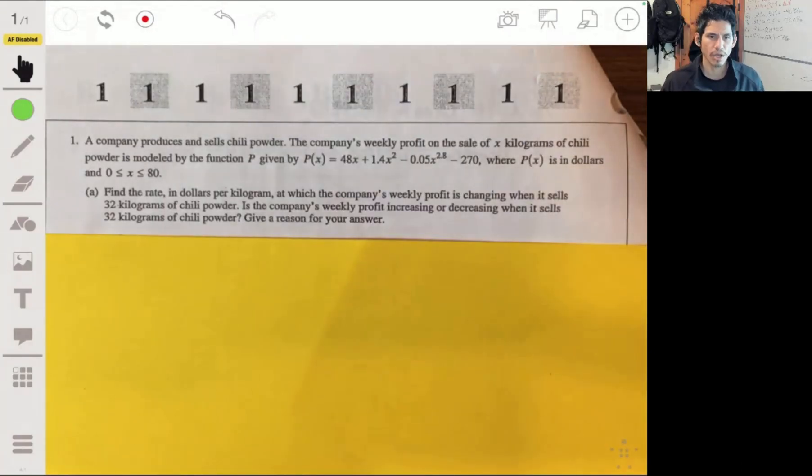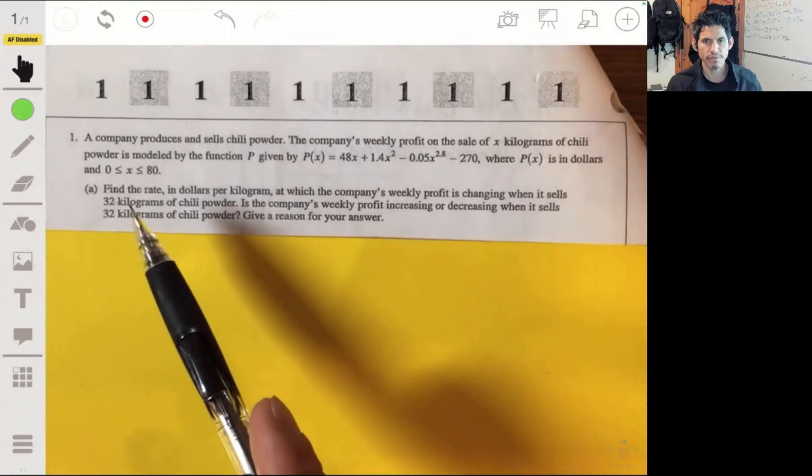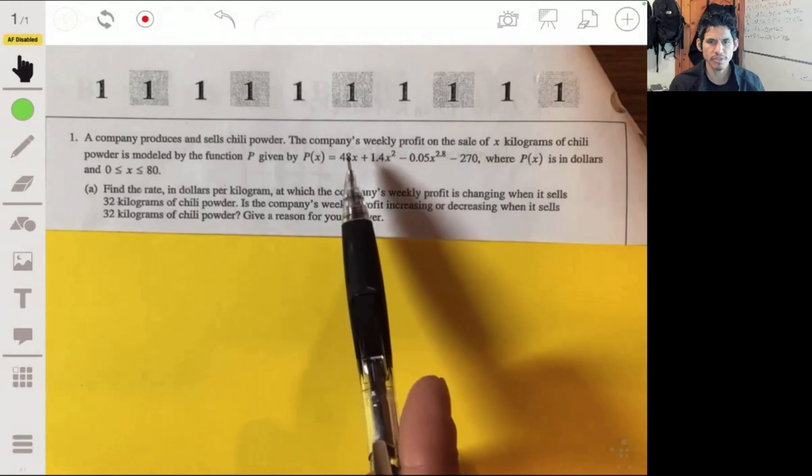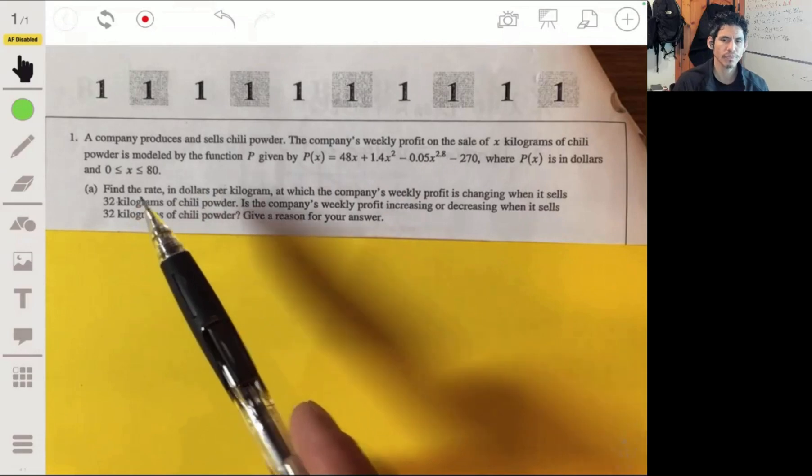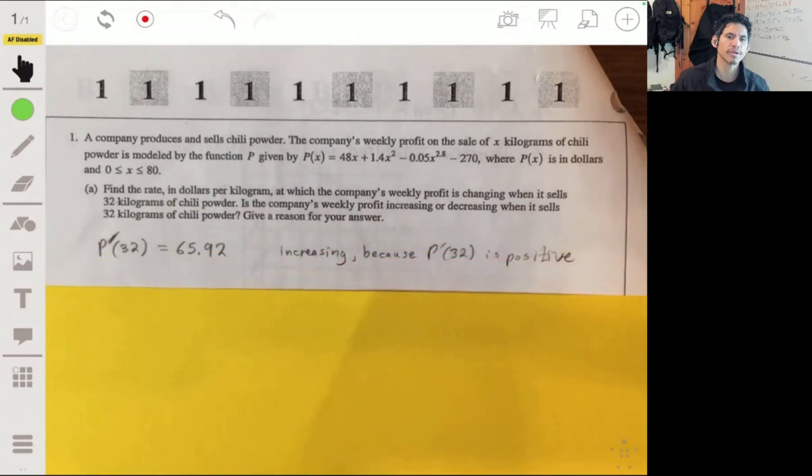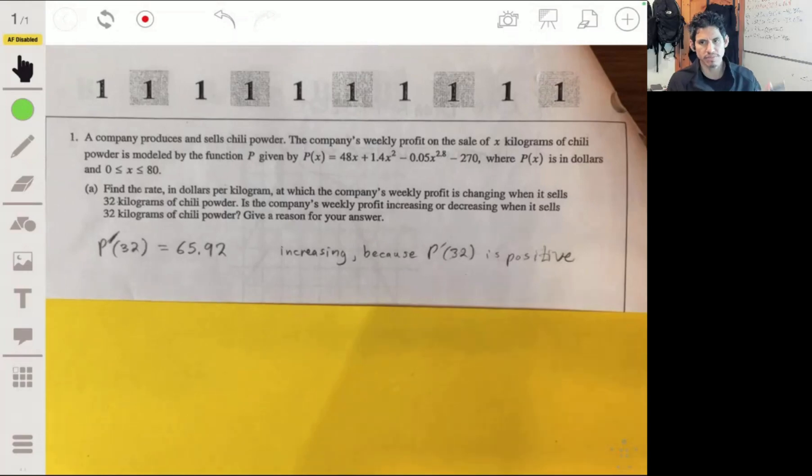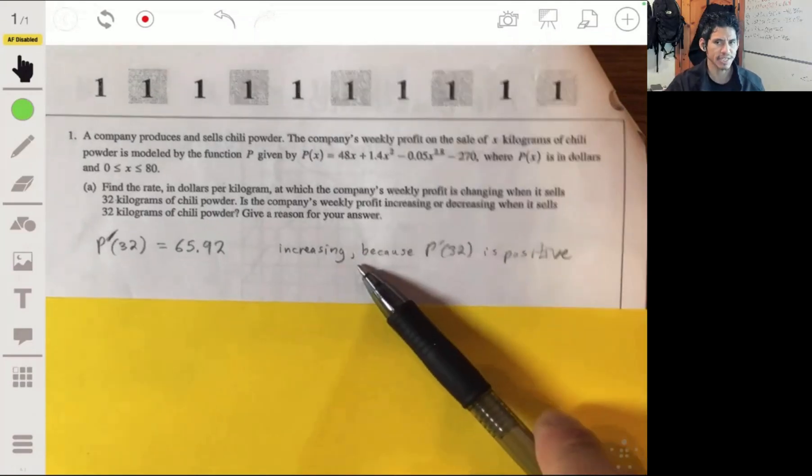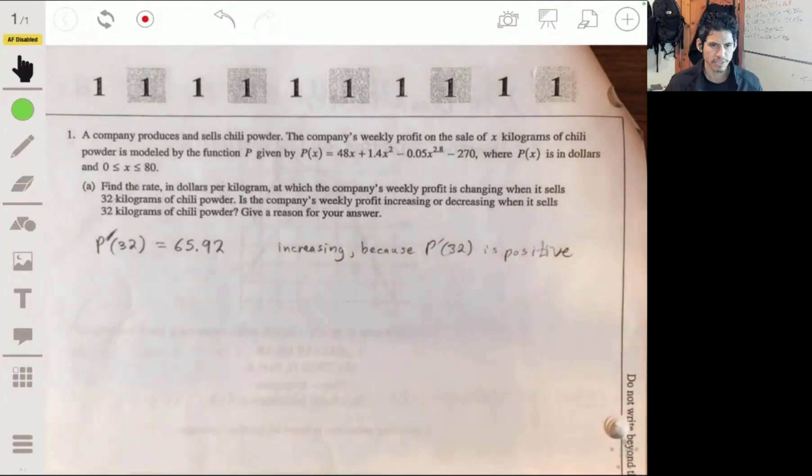Okay, so remember when we're talking about rate, that's the derivative. Let's find the derivative of this function. We want to find P'(32). If we get a positive number, it's going to be increasing. If it's negative, it would be decreasing. If we evaluate P'(32), you'll get about 65.92. That means it's increasing because the rate of change is positive. Make sure you mention that.